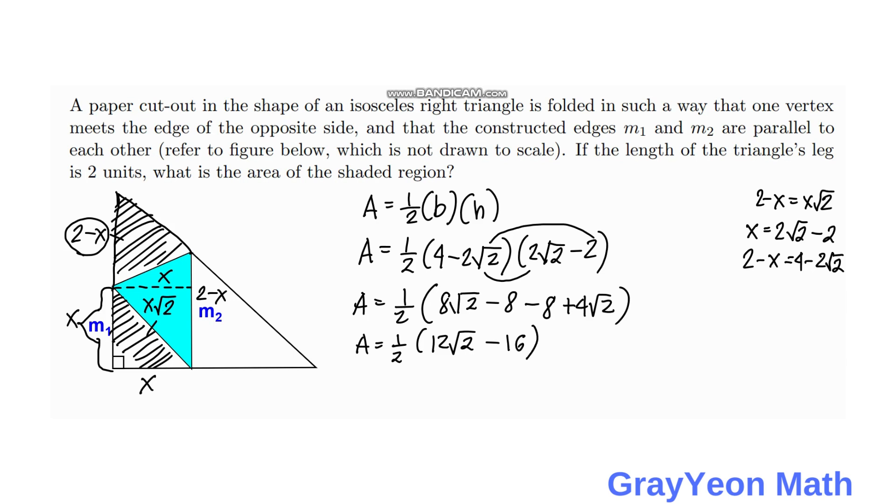Then if we try to factor out the 2, then we have area is equal to 1/2 times 2 times (6√2 minus 8). So we just need to cancel this. And we have area is equal to 6√2 minus 8 square units. And that is our answer.